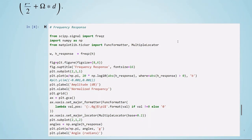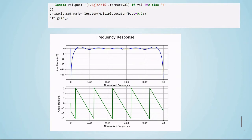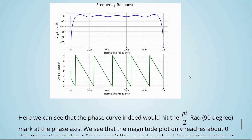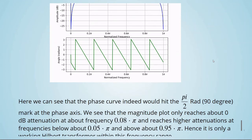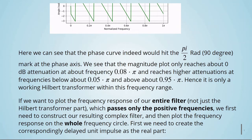We are again using freqz from scipy.signal and matplotlib to plot and numpy. We are calling freqz, and here is our frequency response. We have the magnitude, we have the phase, and here we can see that the phase curve indeed would hit the π divided by 2 radian 90-degree mark at the phase axis. We see that the magnitude plot only reaches about 0 dB attenuation at about frequency 0.08π and reaches higher attenuations at frequencies below about 0.05π and above about 0.95π. Hence, it is only a working Hilbert transformer within this range.